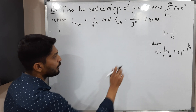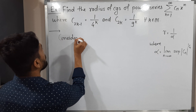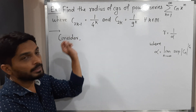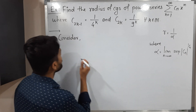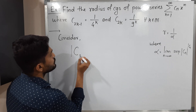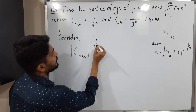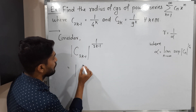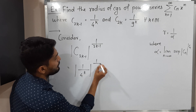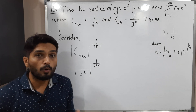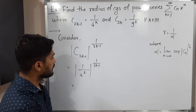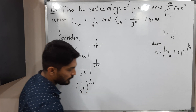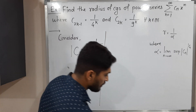Since we have two different definitions of c_n, let us start with the odd suffix case. Consider n = 2k-1 (an odd number), so the power will be 1/(2k-1). The value of c_{2k-1} is 1/4^k, so we have |c_{2k-1}|^{1/(2k-1)} = (1/4^k)^{1/(2k-1)}. There is no need for the absolute value since there is no negative number, so we simply write (1/4^k)^{1/(2k-1)}.